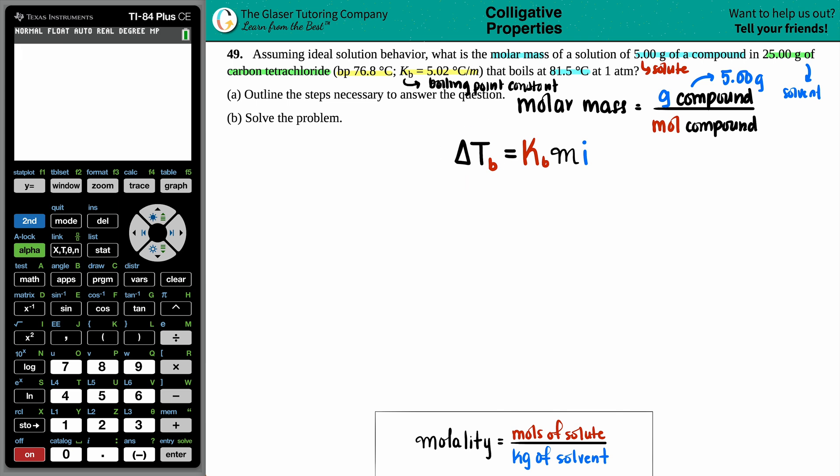The formula is delta Tb equals Kb times molality times i. Delta Tb—this triangle means the change—is the change in boiling point in degrees Celsius, equals the boiling point constant times molality times an i value. The i value is called the Van't Hoff factor. No idea why it's letter i, there's no i's in here, but whatever.